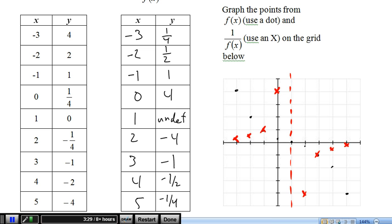Question 2 asks us which values stayed the same. Not surprisingly, 1 and negative 1 — so when y was 1 or negative 1, it stayed exactly the same. And the other thing it asks is what happened when f(x) was 0 — our reciprocal there was undefined.